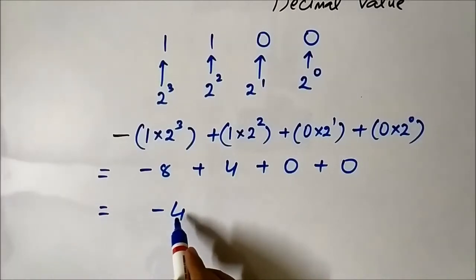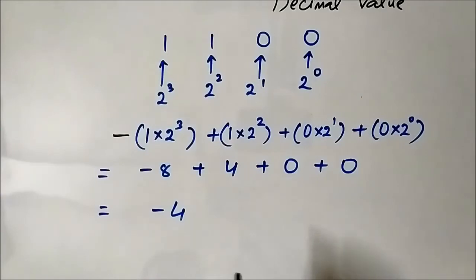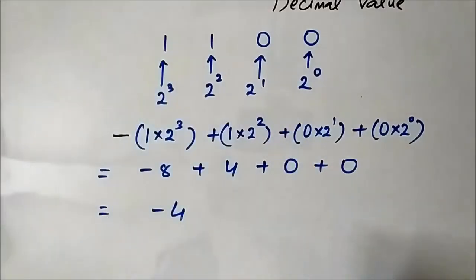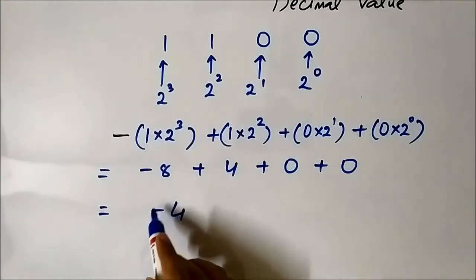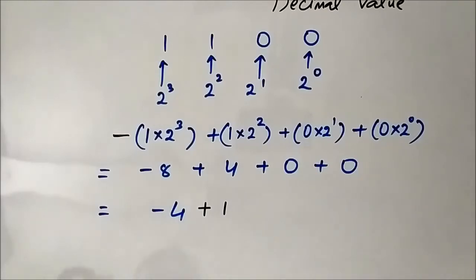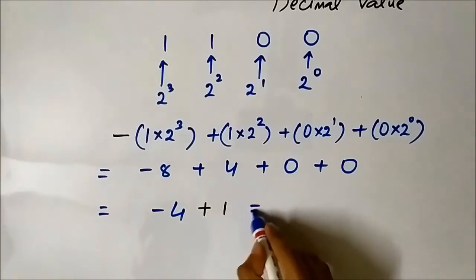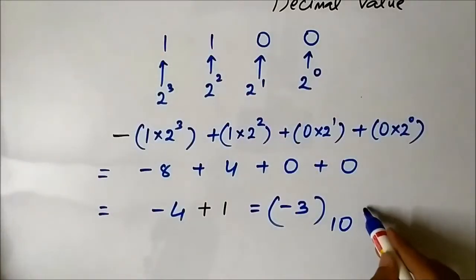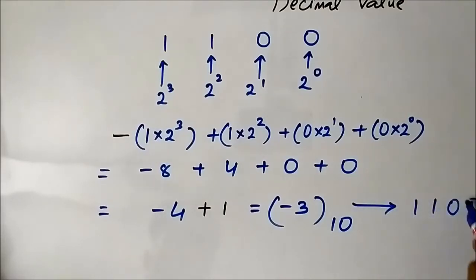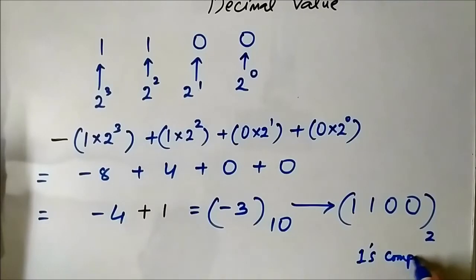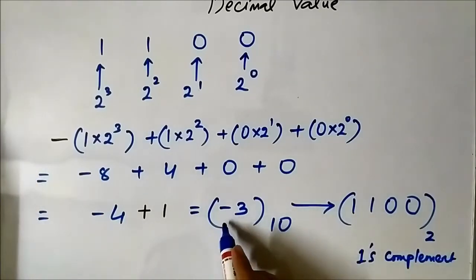This is equal to minus 4. Now this is not the final result — this is not the decimal value yet. In 1s complement system, another important step is that the result you get from the sum of weights expression with the negative MSB sign, you have to add a plus 1 to it. The result you get after adding 1 is the required decimal value. So 1100 represented in 1s complement system has a decimal value of minus 3.